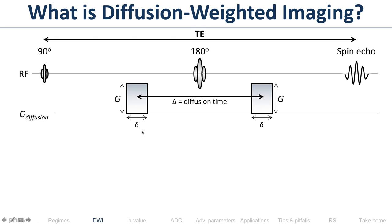We have Greek letter parameters: little delta is the gradient duration (e.g., 10 milliseconds), big G is the gradient amplitude (how high the gradient is), and capital delta is the diffusion time. So on diffusion MRI there's a gradient strength, a gradient duration, and a gradient separation.